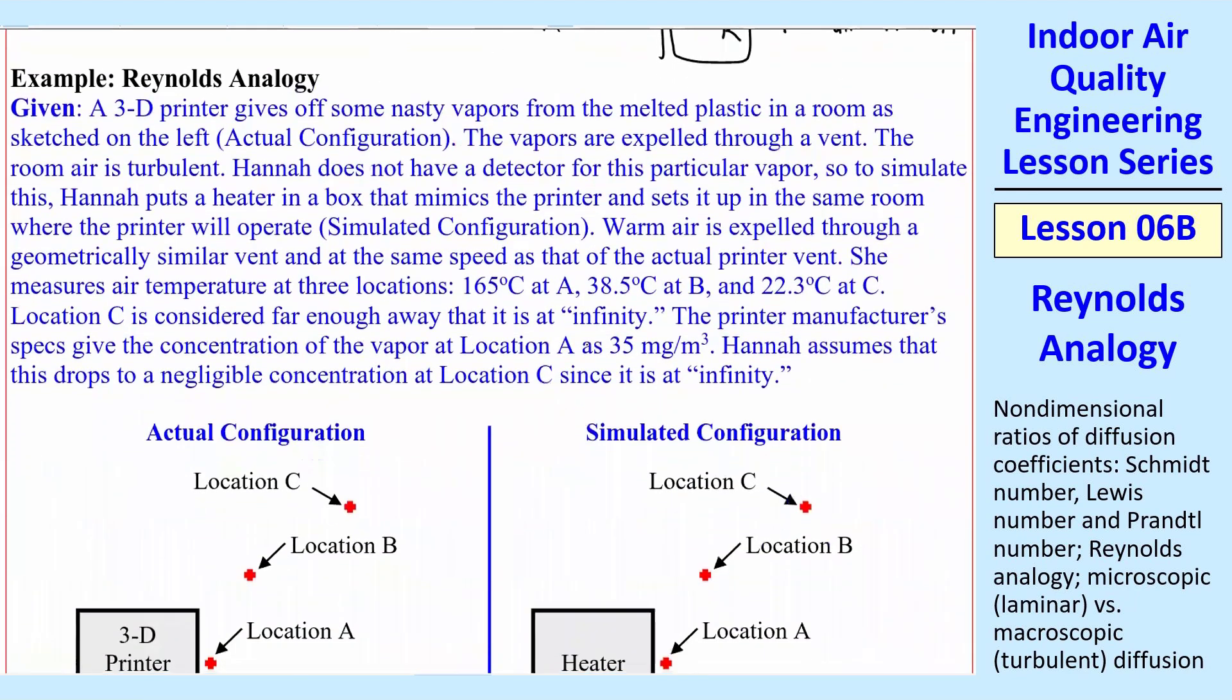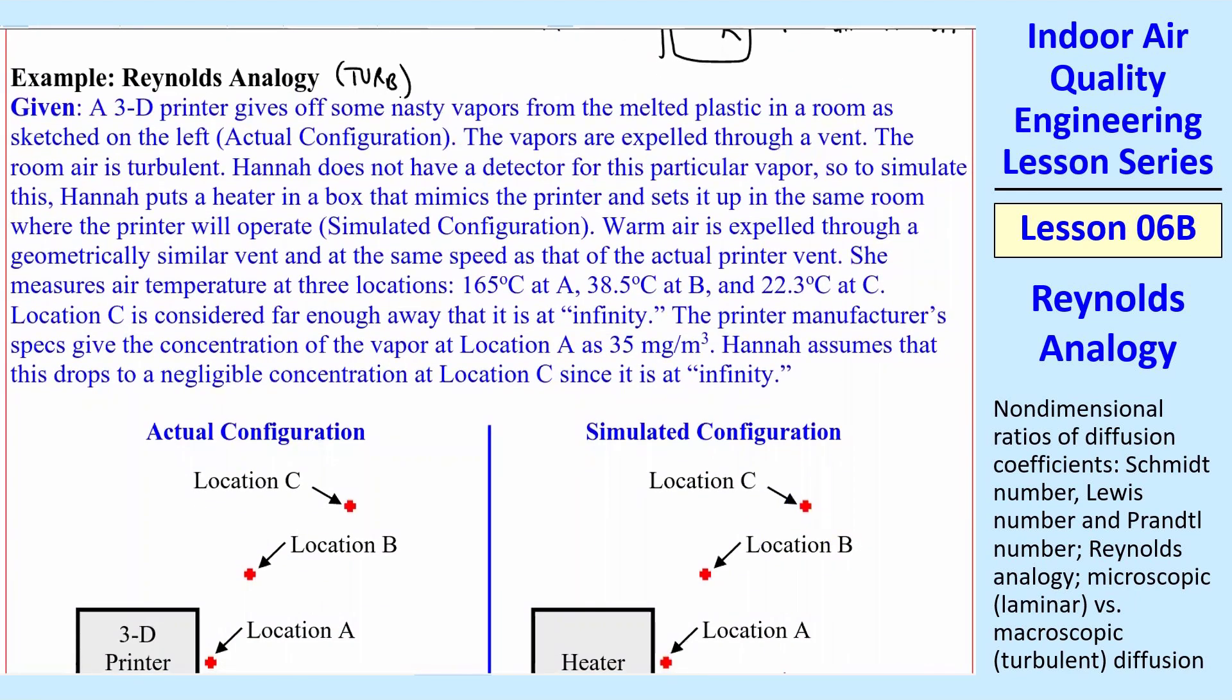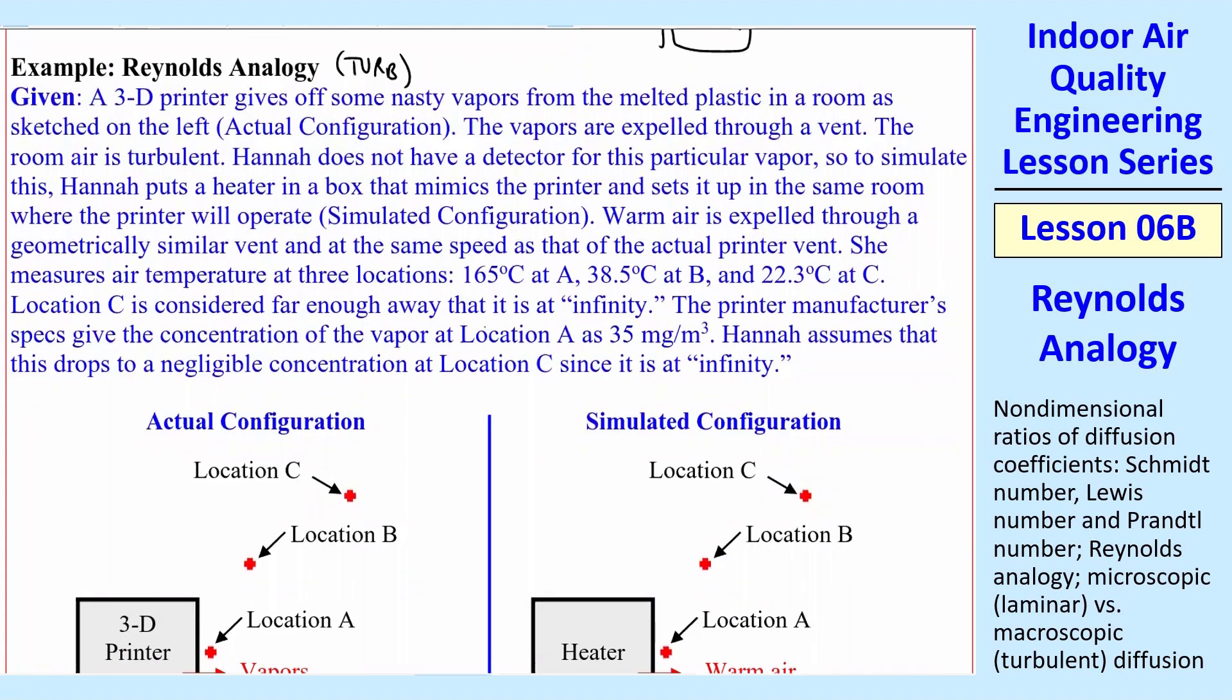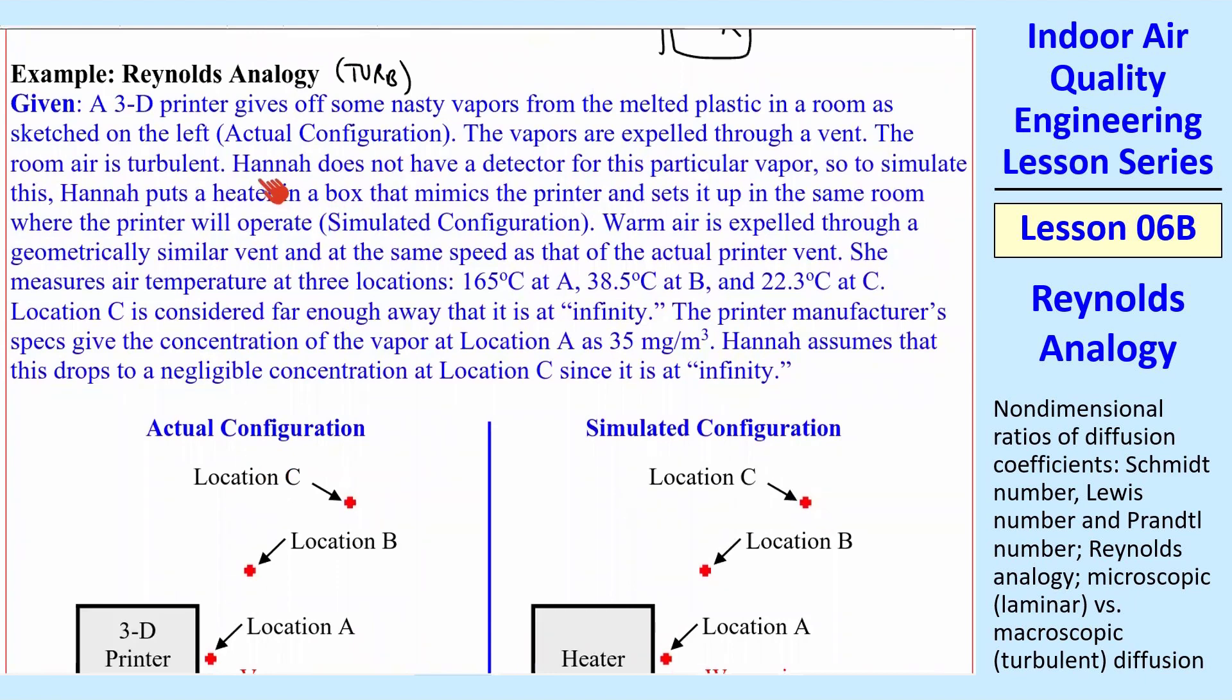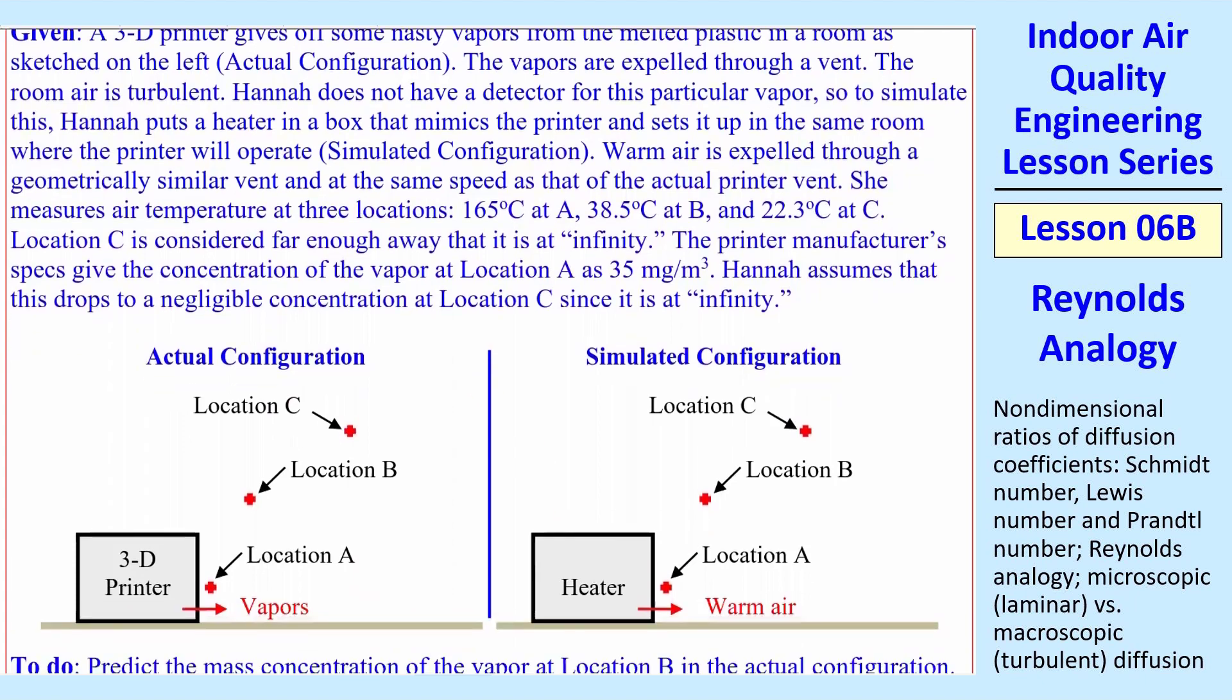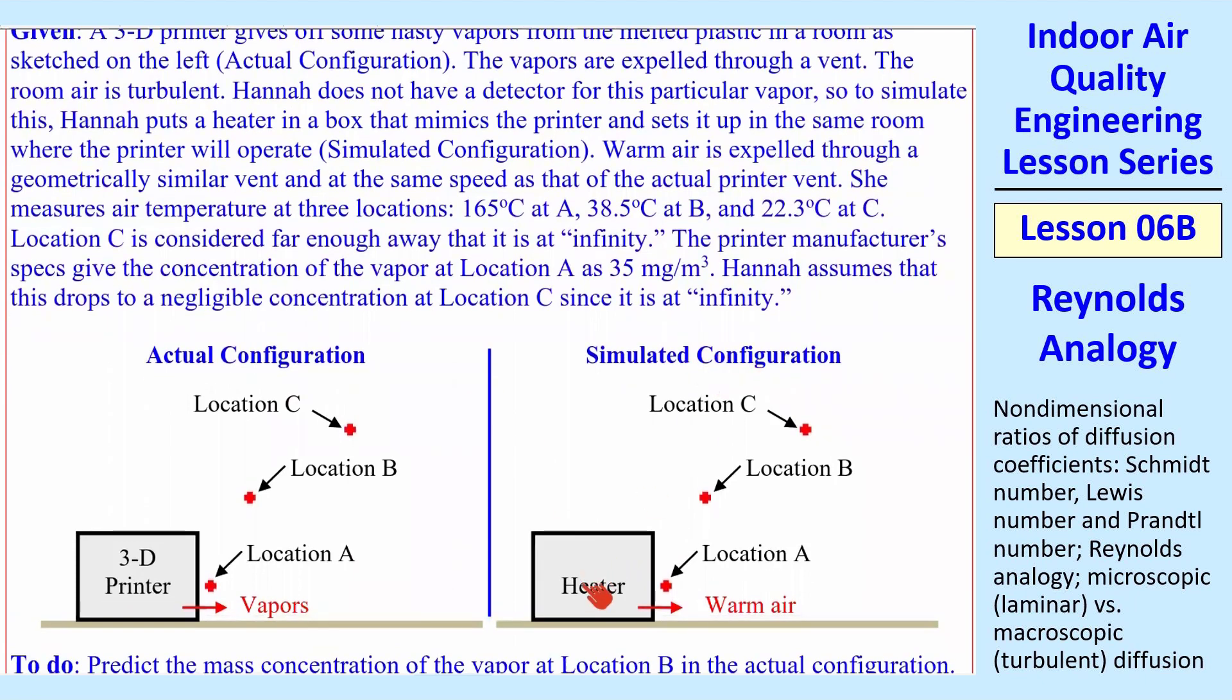Let's do one example for turbulent flow, turbulent Reynolds analogy. This is based on some research that I actually did a few years ago with 3D printers. They give off some nasty vapors, some of which are harmful, and also some particles. From the melted plastic, the actual configuration on the left here is a 3D printer, and there's some kind of vent where vapors are being discharged, and there's three locations where we'll talk about the concentration of that vapor.